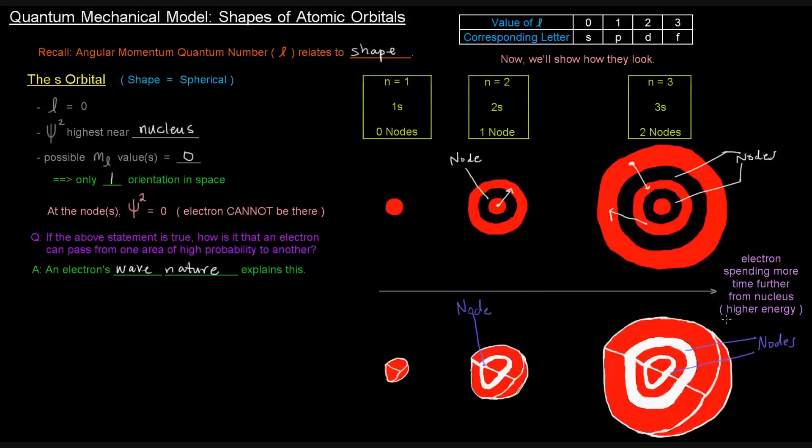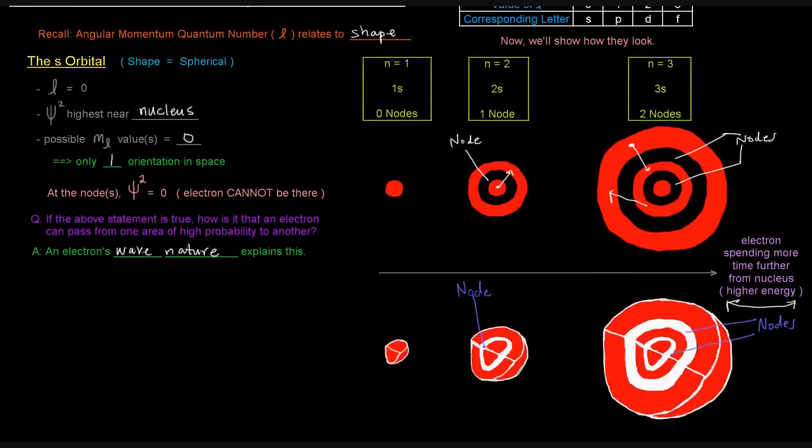Again, that just is the idea that if an electron is further away from the nucleus, it is higher in energy because it doesn't want to be further away from the nucleus. It wants to be closer to that positive charge in the nucleus. So that's the s orbital.